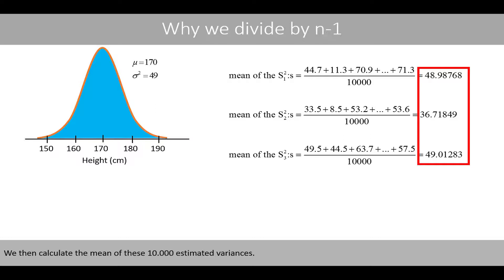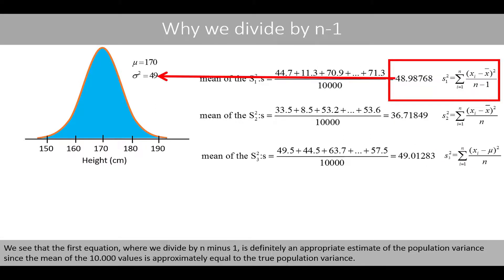When we calculate the mean of these 10,000 estimated variances, we see that the first equation — where we divide by n minus 1 — is definitely an appropriate estimate of the population variance, since the mean of the 10,000 values is approximately equal to the true population variance.